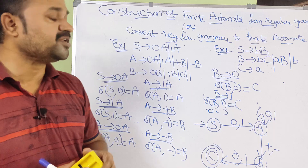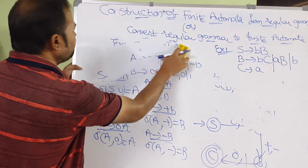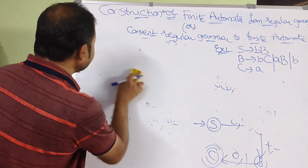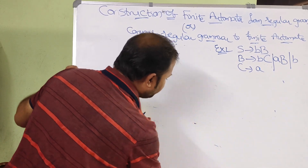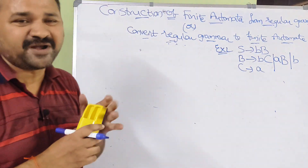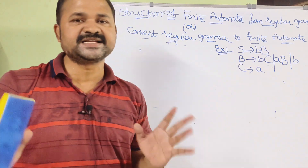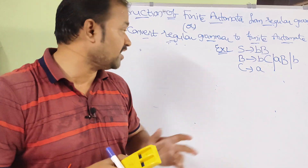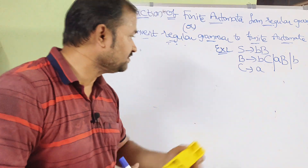Now let us see the second example. For the second grammar: V = {S, B, C} (non-terminals/states), T = {a, b} (terminals/input alphabet), and start symbol S. In the finite automata, Q = {S, B, C}, σ = {a, b}, and Q₀ = S. Based on the grammar productions we write the transition functions, and if no next state is given, we introduce a new final state.